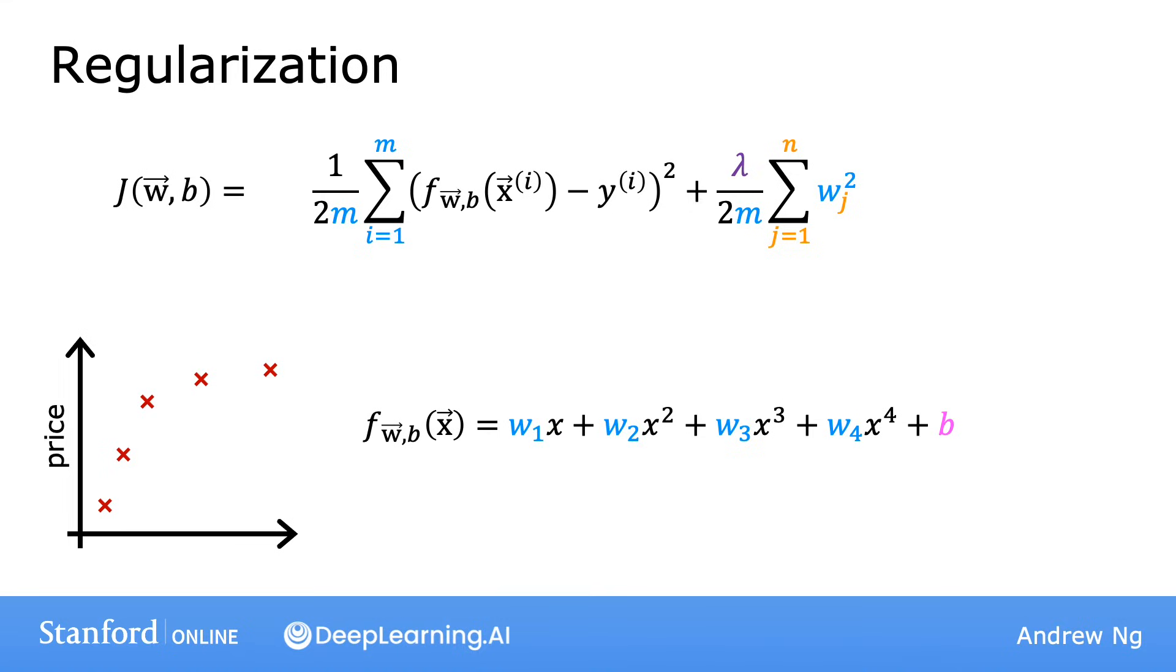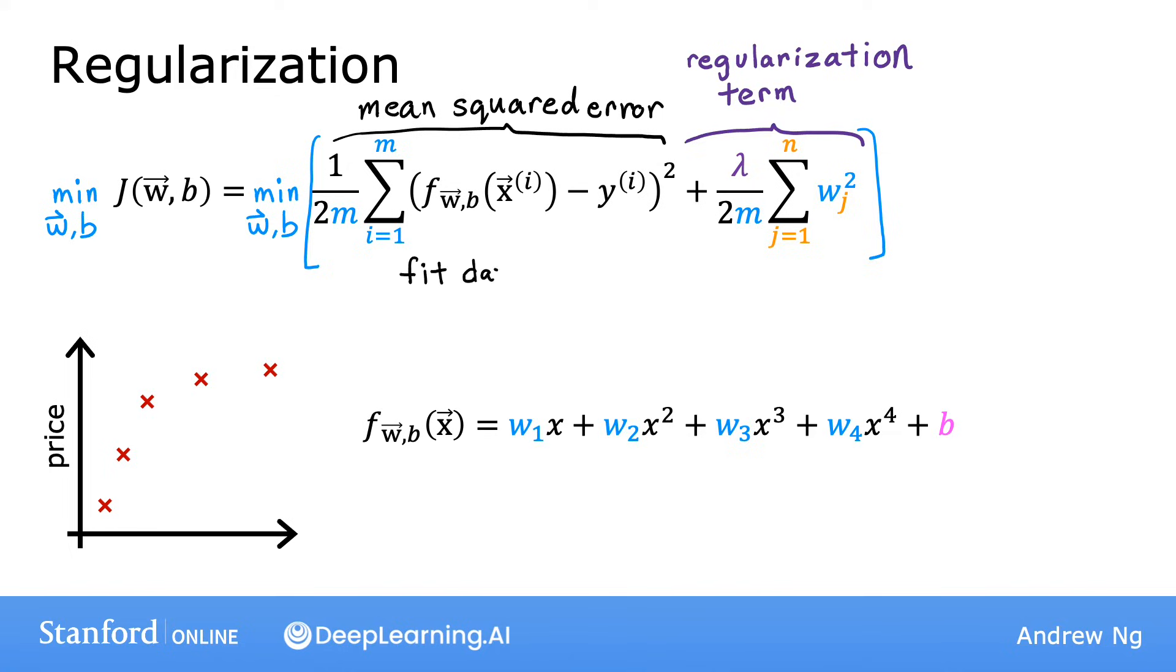So, to summarize, in this modified cost function, we want to minimize the original cost, which is the mean squared error cost, plus additionally the second term, which is called the regularization term. And so this new cost function trades off two goals that you might have. Trying to minimize this first term encourages the algorithm to fit the training data well, by minimizing the squared differences of the predictions and the actual values.